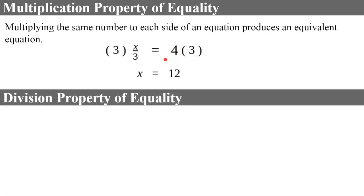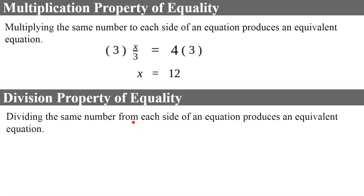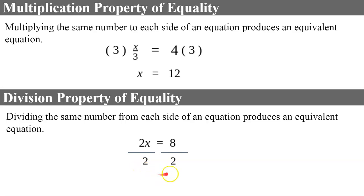Now let's use the division property of equality to solve an equation. Dividing the same number from each side of an equation produces an equivalent equation. If I have the equation 2x is equal to 8, this is 2 times x. The inverse of multiplying by 2 is to divide by 2. Using the division property of equality, I divide both sides by 2, giving me x is equal to 4, since 8 divided by 2 is 4.